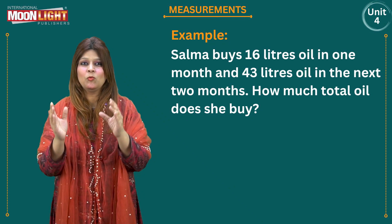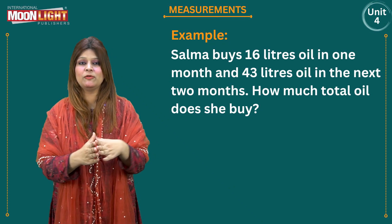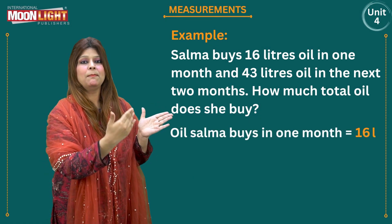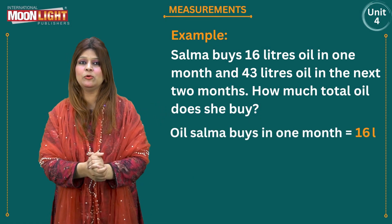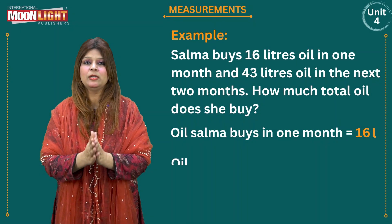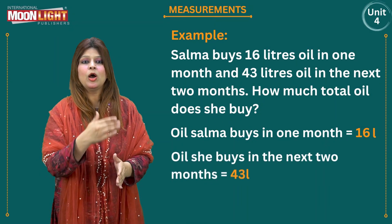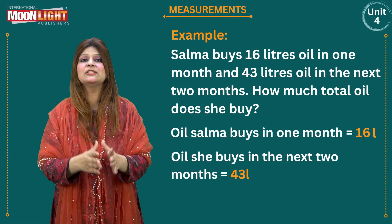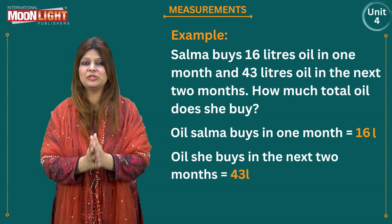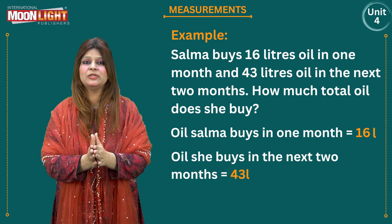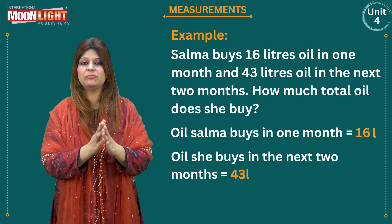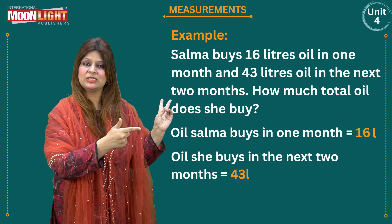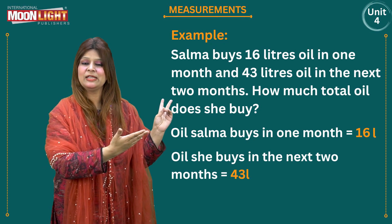Starting the solution: the first statement will be — Oil Salma buys in one month is equal to 16 liters. The second statement will be — Oil she buys in the next month is 43 liters. These two statements have been taken directly from the question.